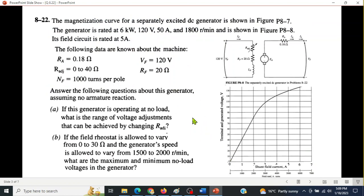Okay, now this is the question given. A magnetizing curve for a separately excited DC generator is shown in figure. The generator is rated at 6 kilowatt, 120 volt, 50 ampere, and 1800 RPM. And this is shown here.